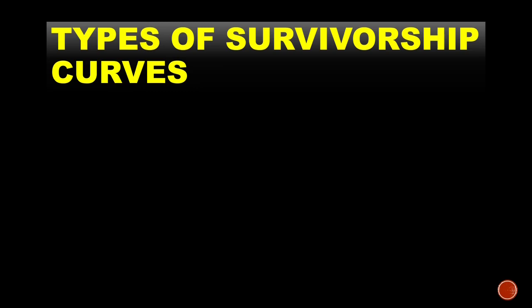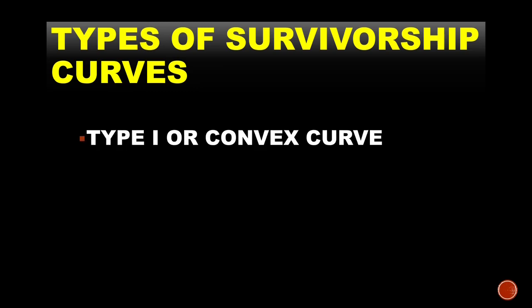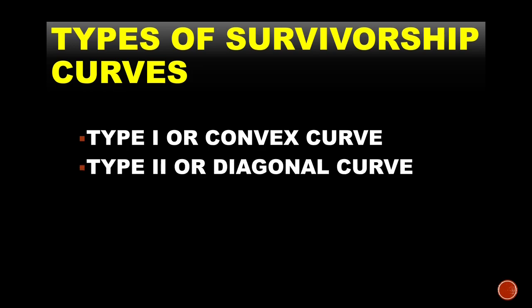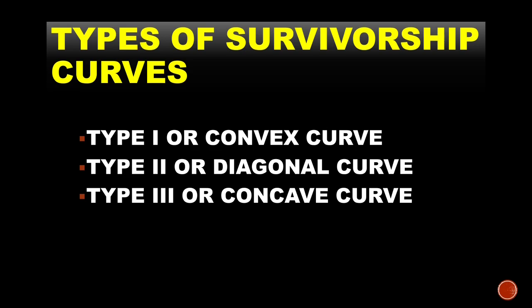There are three types of survivorship curves. First is Type 1, also called the convex curve, named so because the shape of the curve is convex. Second is Type 2, also called the diagonal curve, because the curve follows a diagonal shape. Third is Type 3, also called the concave curve, because the shape of the curve is concave.